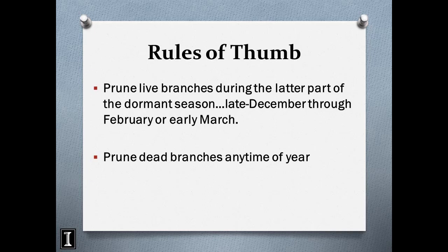Prune live branches during the latter part of the dormant season. In Illinois, I encourage landowners to start pruning late December through February or early March, depending on phenology. Sometimes it's 70 degrees in the second week of March, so pay attention to the weather — these dates are not set in stone. In contrast, you can prune dead branches any time of year.